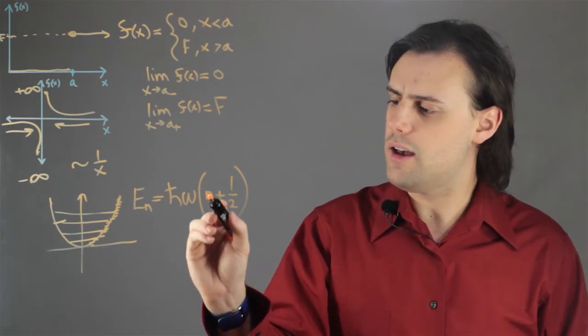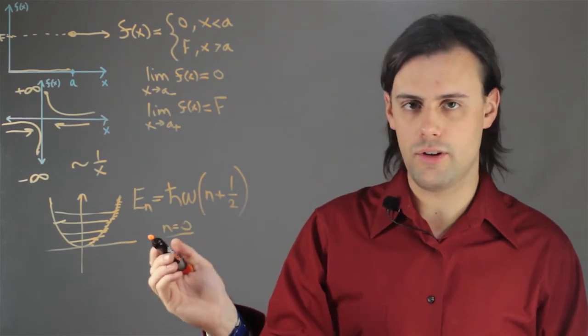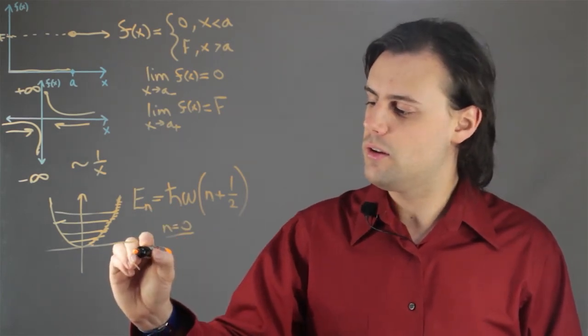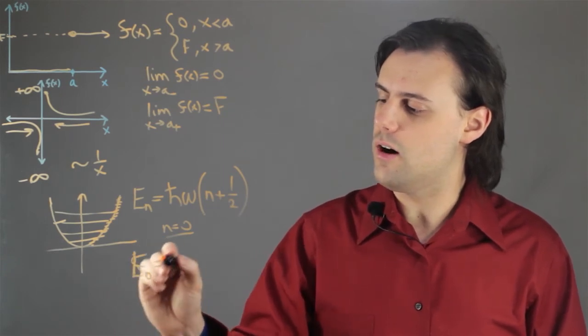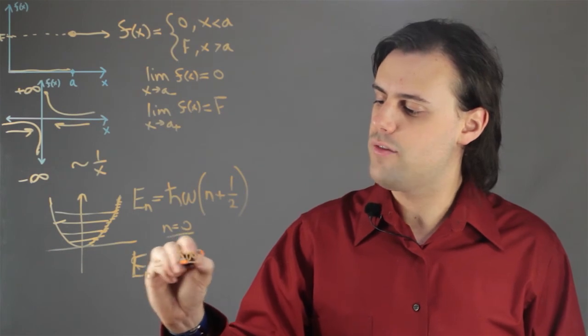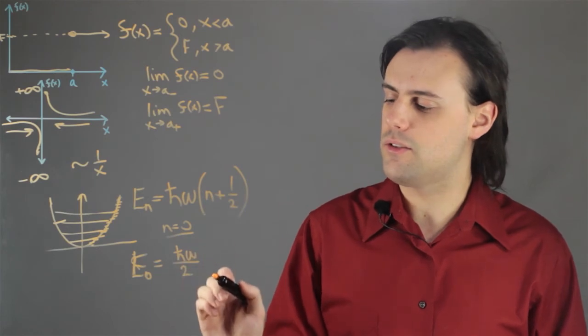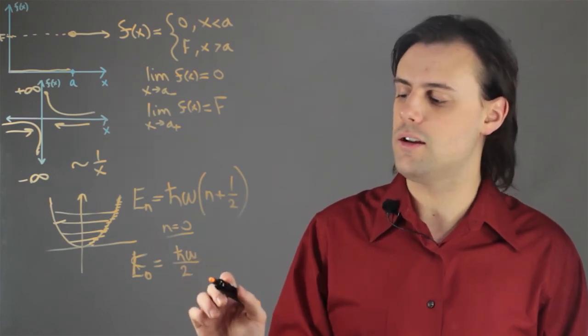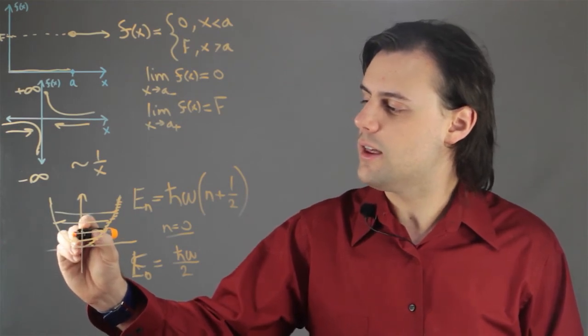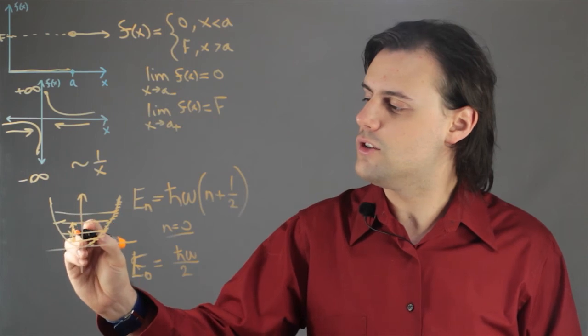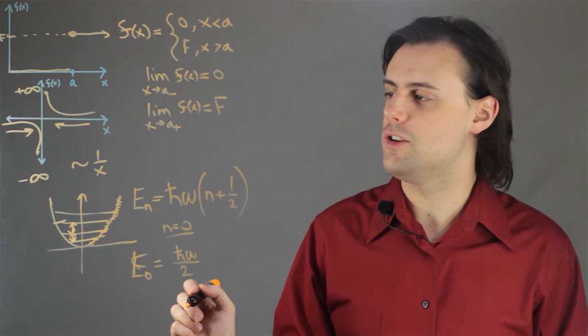So we notice that if n equals zero, we don't have zero energy. We have what's called zero-point energy. So E-naught equals half h-bar omega. This is something that is strikingly non-classical. But we see that there's a discontinuity, that there are these discrete jumps between energy levels. And this is yet another example of discontinuity in physics.